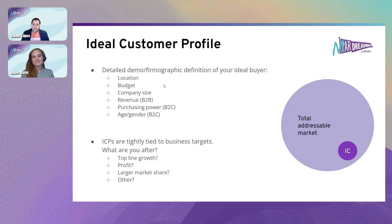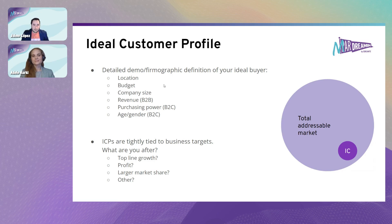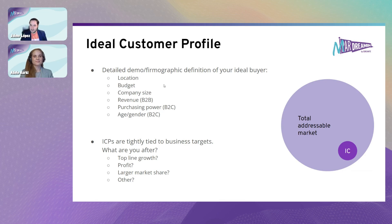Some things to consider about an ideal customer profile: it's a very precise demographic and firmographic definition of this ideal buyer. In B2B you'll see things like revenue, company size, budget, and location. In B2C you often see purchasing power, age, and gender. The ICP isn't anybody or everybody who can buy your product — it's your ideal customers. The total addressable market is pretty large, but the ideal customers are a small subset of those. By doing very well with ideal customers, you are good enough and compelling enough to also capture many people who are not ideal but within the addressable market.